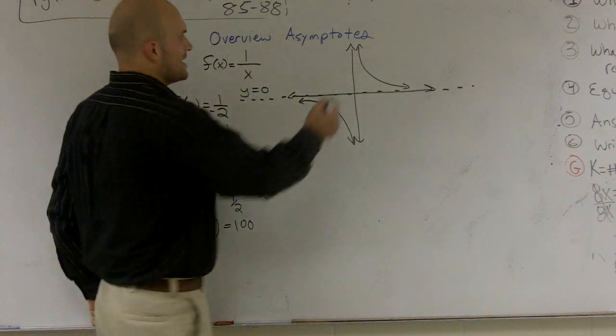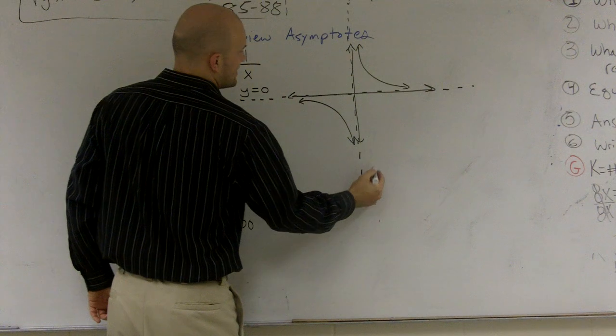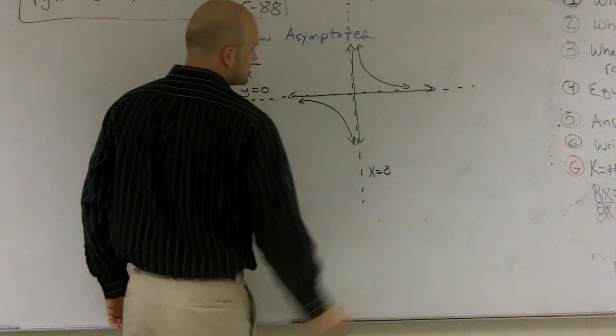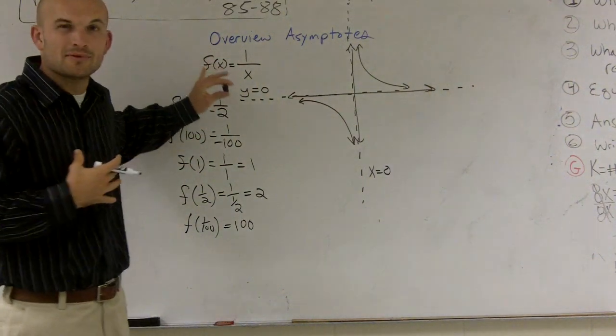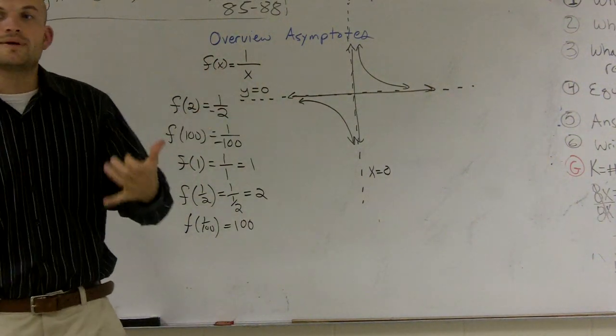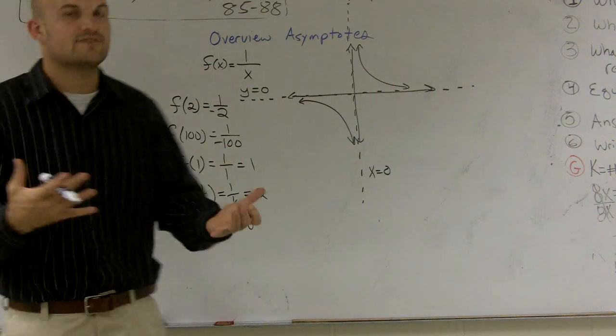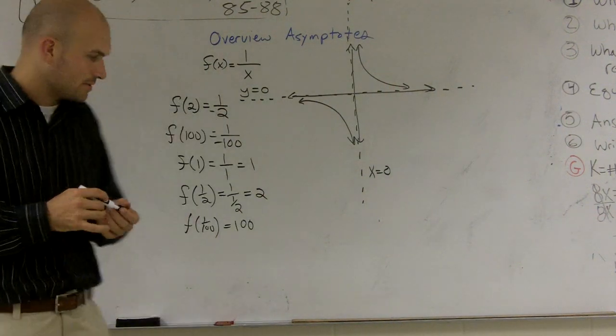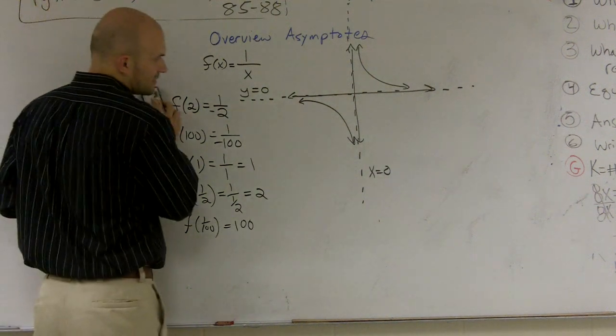So the vertical asymptote for this problem is going to be x is equal to 0. So now this is a pretty elementary problem. This is pretty basic. How are we going to distinguish when we can find the horizontal and the vertical asymptote? Well, there's a couple ways we can do this.